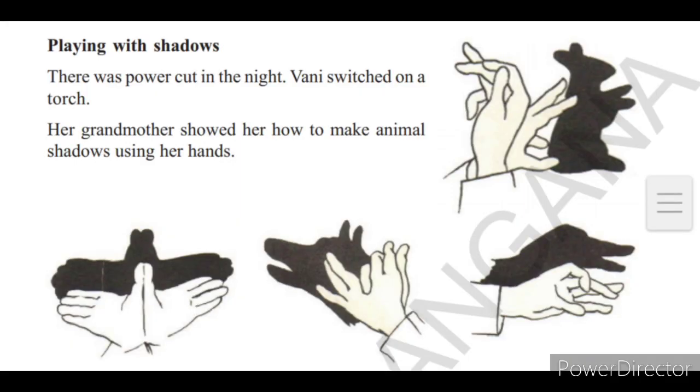Next topic, Playing with shadows. There was power cut in the night. Bani switched on a torch. Her grandmother showed her how to make animal shadows using her hands. So you can see in the picture how animal shadows are made with the hands, with shadows.